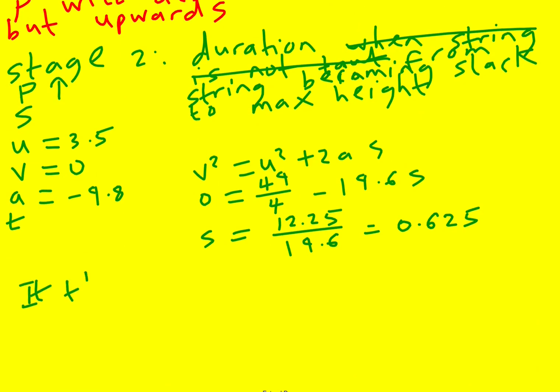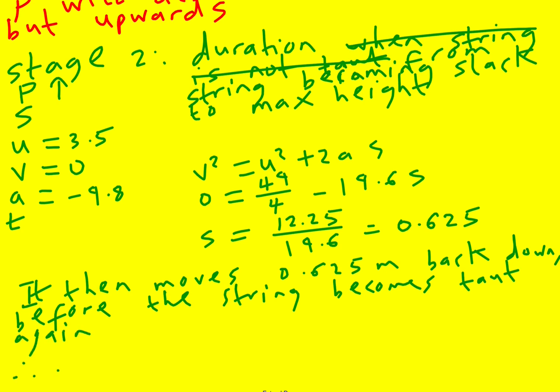So it then moves 0.625 meters back down before the string becomes taut again. Therefore, distance moved is going to be 2 times 0.625. It's going to be 1.25 meters.